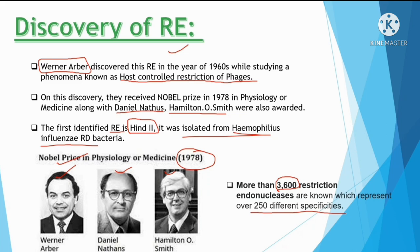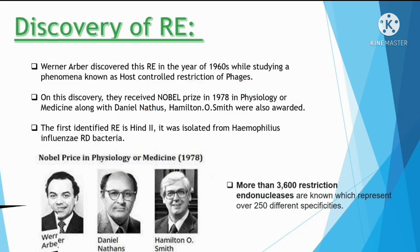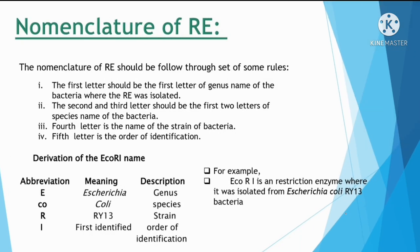Next is the nomenclature of restriction endonucleases. The nomenclature of restriction enzymes follows a set of rules. There are four rules: Rule 1, Rule 2, Rule 3, and Rule 4. Let's take an example — EcoRI — to understand these rules.